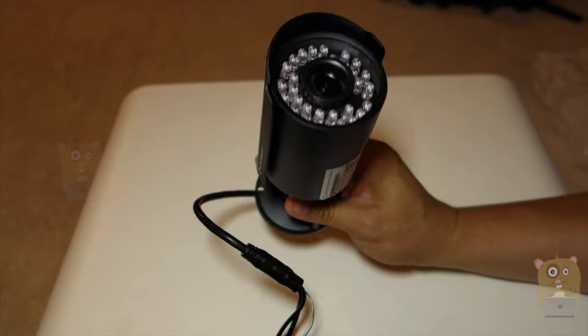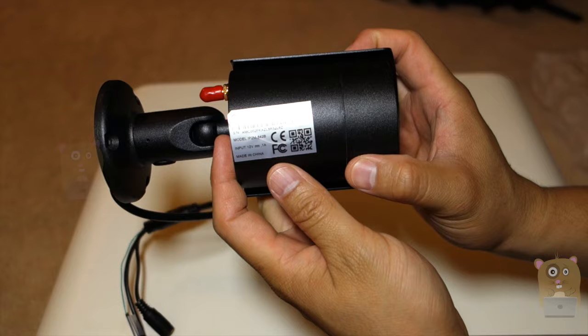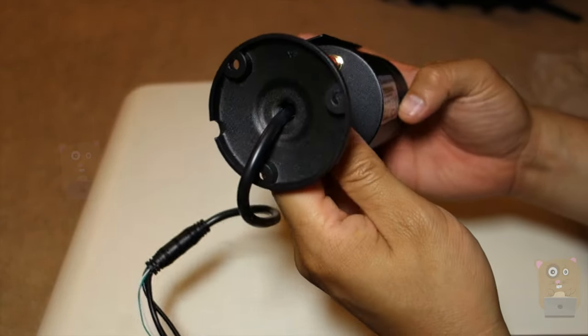That's it. And this was the last item that was inside the box. The bullet camera. The specs on here just list the model number and the input for voltage.